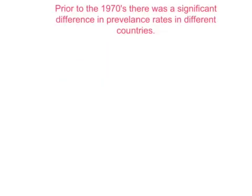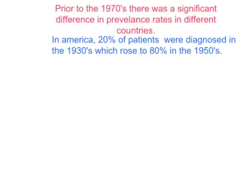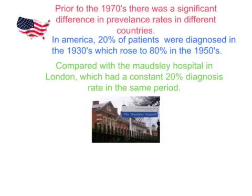Prior to the 1970s, there was a significant difference in the prevalence rates between different countries. In America particularly, the diagnosis was used liberally in comparison to other countries because their classification systems used broader definitions. In the US, 20% of patients were diagnosed with schizophrenia in the 1930s, but this rose to 80% in the 1950s. At the Maudsley Hospital in London, the diagnosis rate of 20% remained constant throughout the same period.